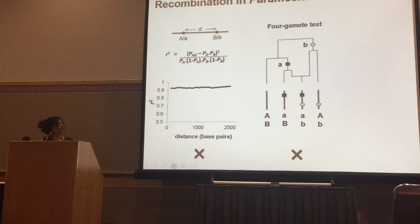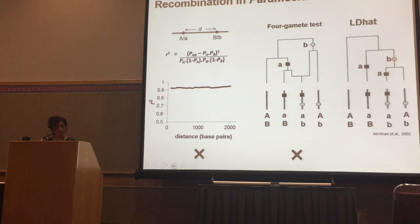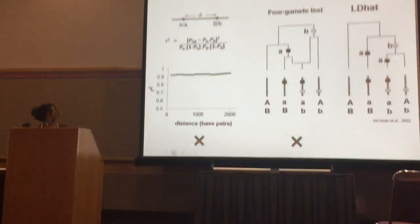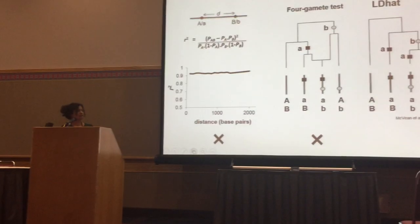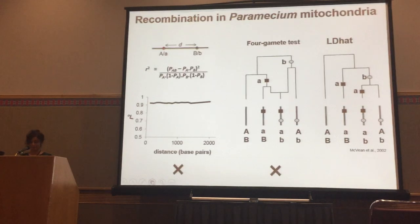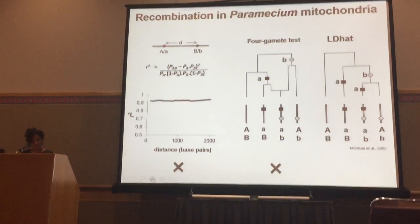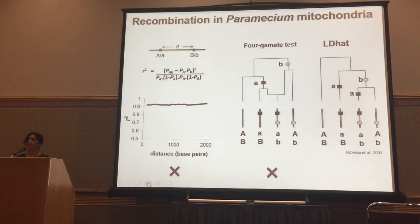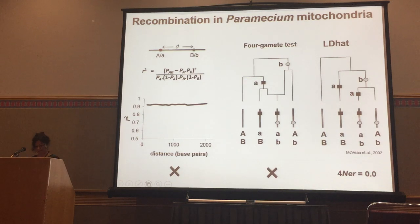Lastly, if the infinite sites model is violated, recurrent mutations can also look like recombination. Programs like LDHAT can account for that and estimate the recombination rate. We ran this for all four species and estimated the recombination rate to be zero. So there is no recombination in mitochondria.